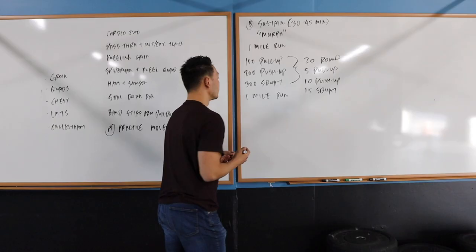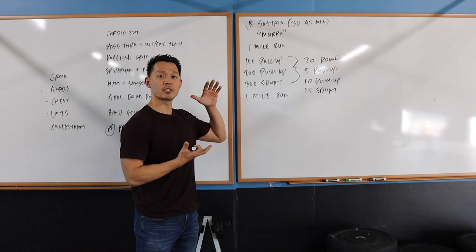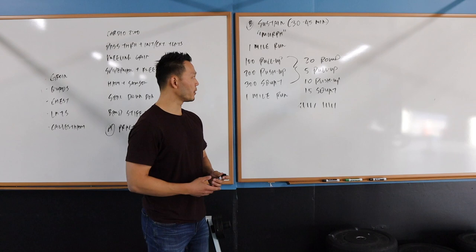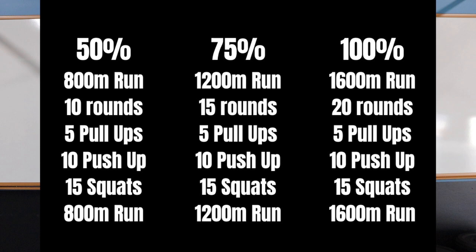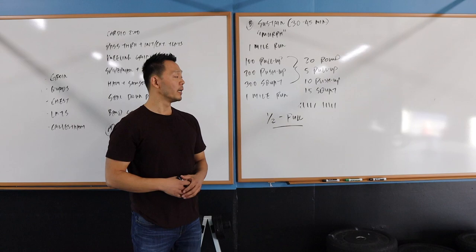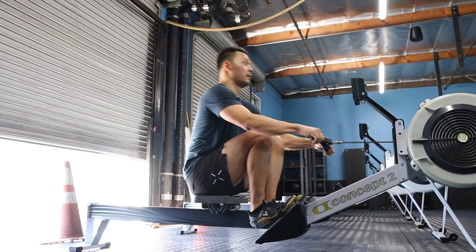For some of our members, the options were to complete anywhere from half to the full workout of Murph. For those who weren't comfortable running or only wanted to run part of it, running, rowing, and biking were optional.